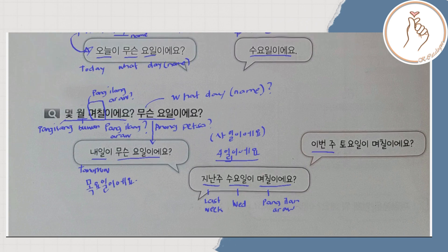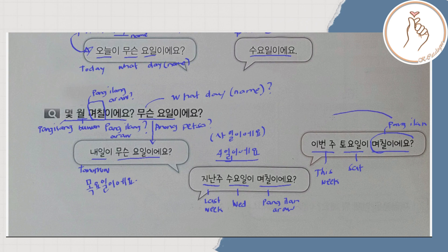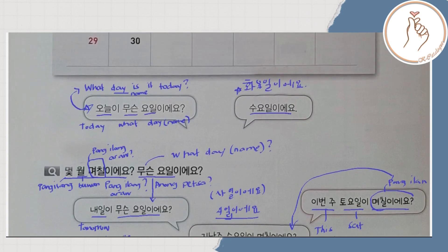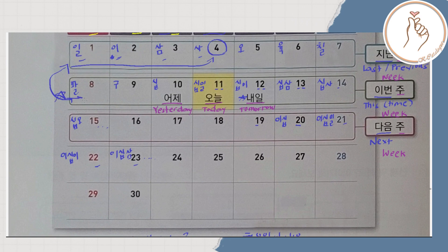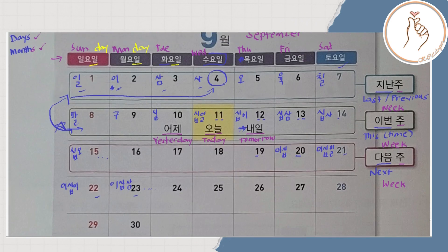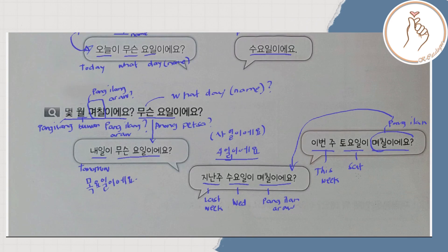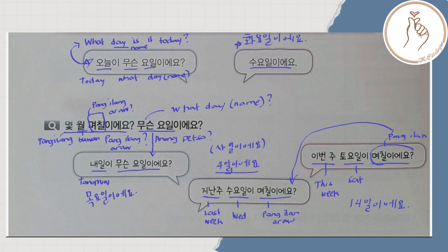Ibondu tuyuiri myochir rieyo? Ibondu means this week, tuyuil means Saturday. So again, myochir asks what number/date. Looking at our calendar, this week's Saturday is the fourteenth. So the answer is: ship-sa il iyeyo — it's the 14th. I hope that's clear and that you can follow along with how we answer.